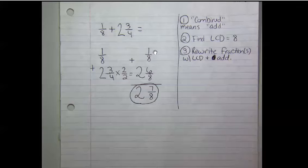One-eighth plus two and six-eighths is two and seven-eighths. Two and seven-eighths is simplified. I can't reduce it any further, so that's my final answer.